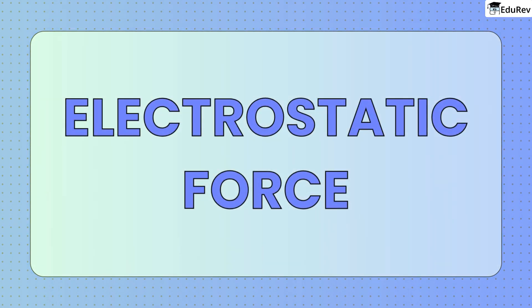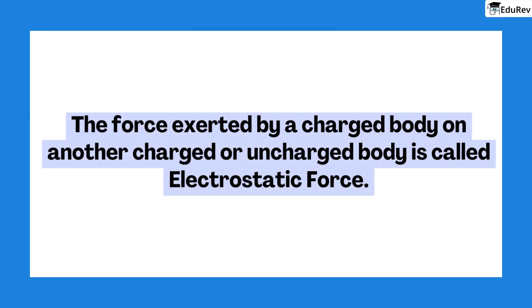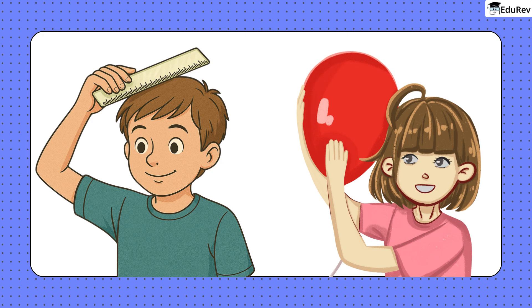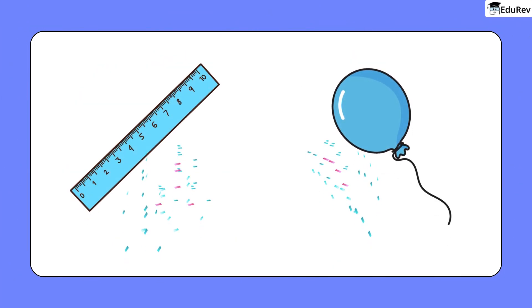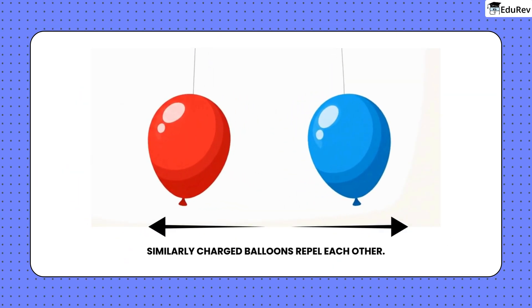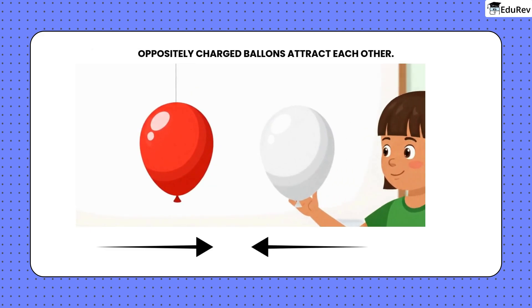Electrostatic force. The force exerted by a charged body on another charged or uncharged body is called electrostatic force. Rubbing a plastic scale or balloon builds static charge. A charged object can attract small paper bits. Two similarly charged balloons repel, opposite charges attract.